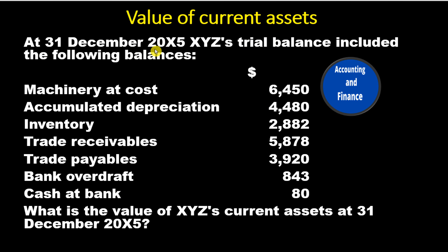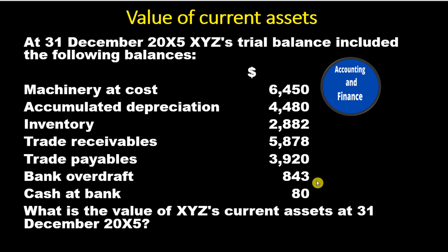Machinery at Cost $6,450. Accumulated Depreciation $4,480. Inventory $2,882. Trade Receivables $5,878. Trade Payables $3,920. Bank Overdraft $843. Cash at Bank $80. What is the value of XYZ's current assets at 31 December 20X5?